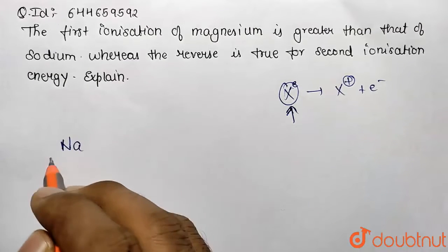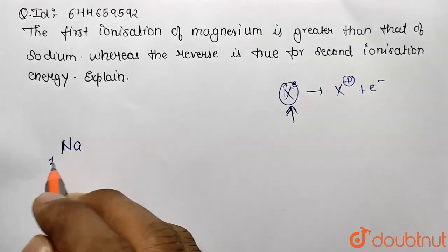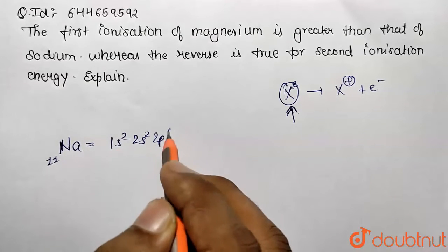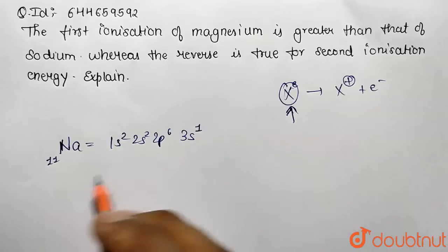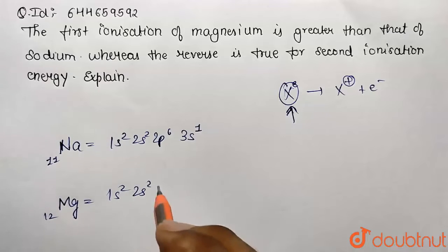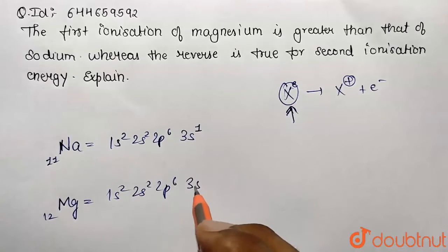So understand the case of magnesium and sodium. Sodium is basically having atomic number 11, it can be written as 1s² 2s² 2p⁶ and 3s¹. Similarly, magnesium is atomic number 12, so this is 1s² 2s² 2p⁶ 3s². Basically it is stable configuration of s fulfilled here, it is s unfilled.